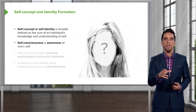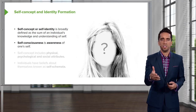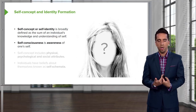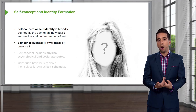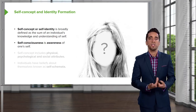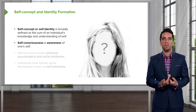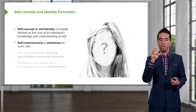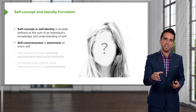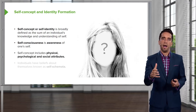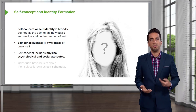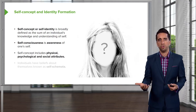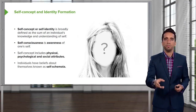Self-concept is a little bit different than self-consciousness, which is the awareness of oneself. So you know who you are with self-consciousness, but self-concept or identity talks about specific individual traits that you think you might have. Self-concept includes things like physical, psychological, and social attributes that you attribute to yourself.